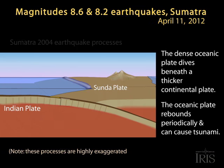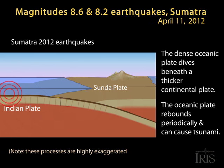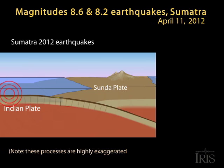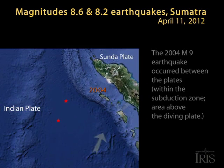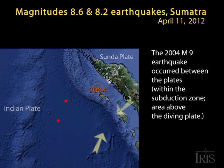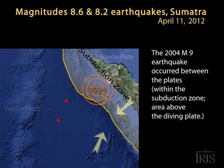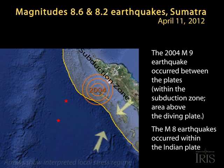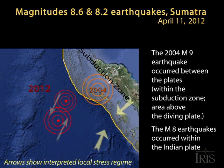The recent earthquakes were not in the subduction zone. This map shows the position of the 2004 earthquake in the subduction zone relative to the magnitude 8 earthquakes, which were likely due to a left lateral strike-slip component within the Indian plate.